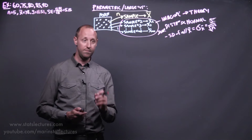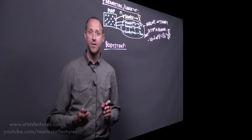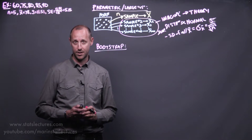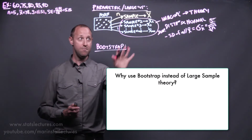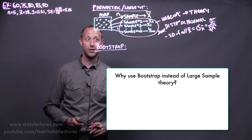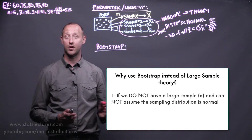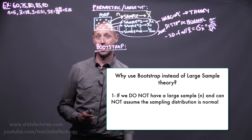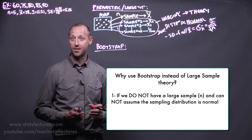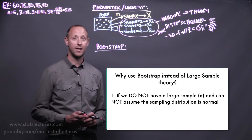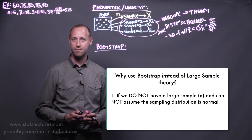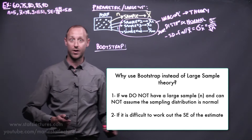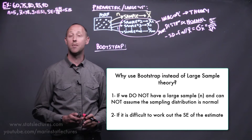We're going to get to talking about a bootstrap approach. Let's try and build up why we might do this. The two main reasons for considering a bootstrap approach rather than this large sample theory approach: the first is what if we don't have a large sample? If we don't have a large sample size, we can't assume that the sampling distribution is approximately normal — so what do we do?